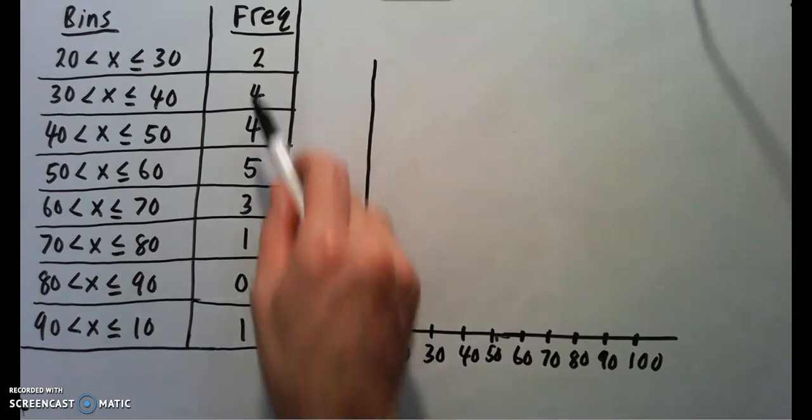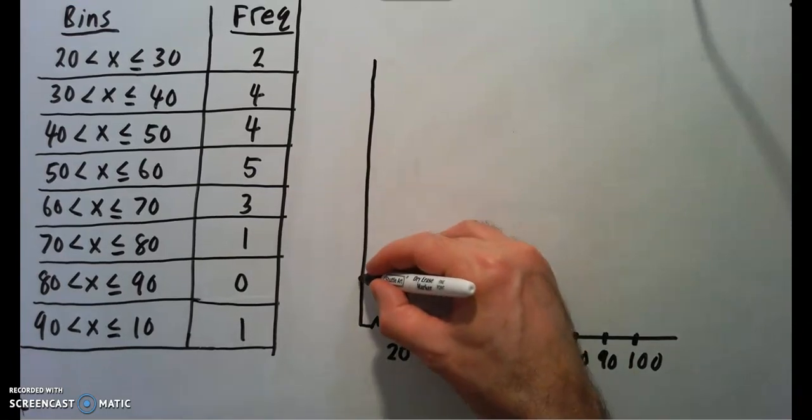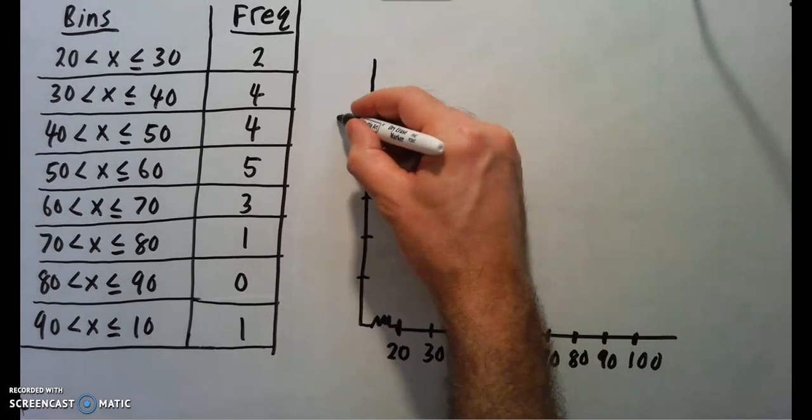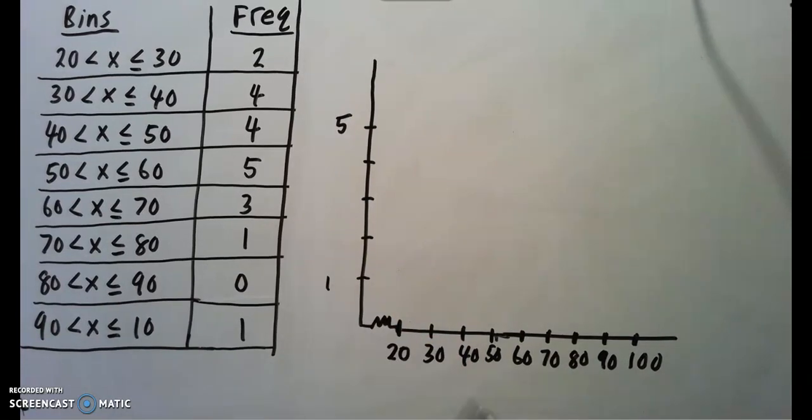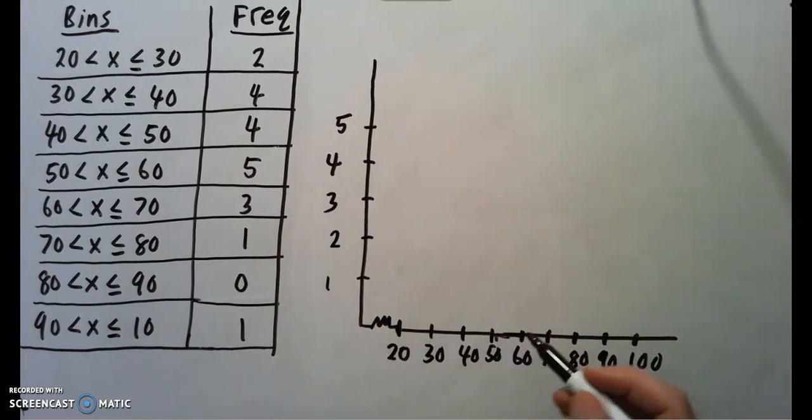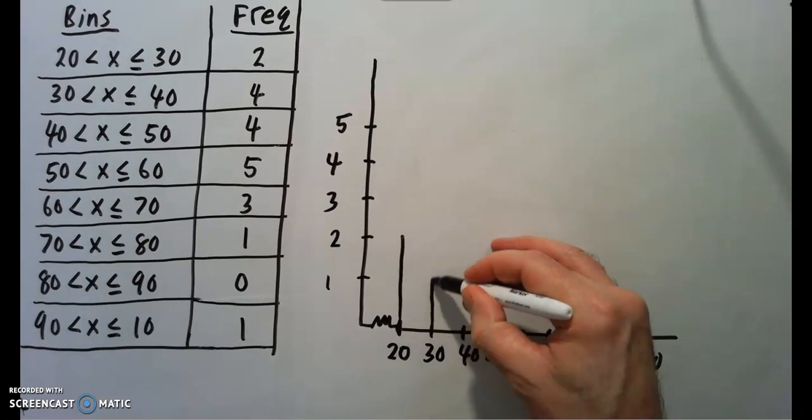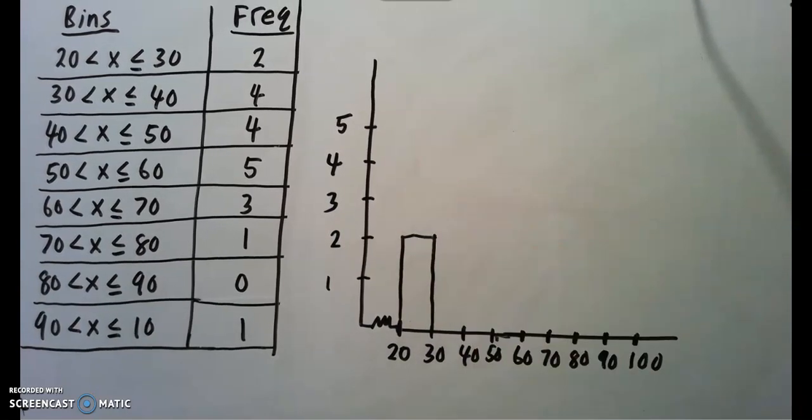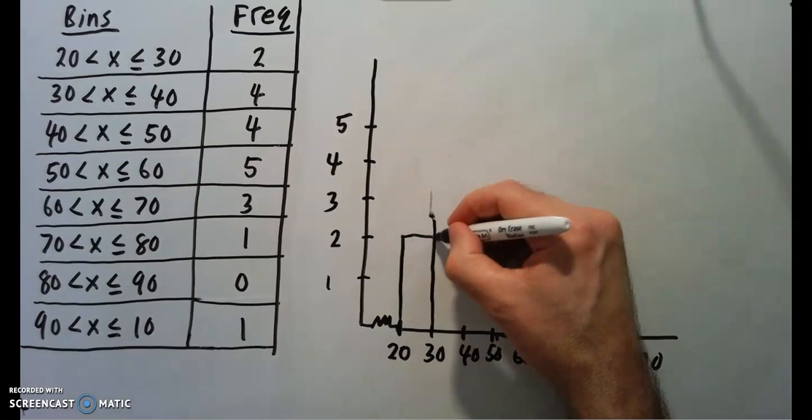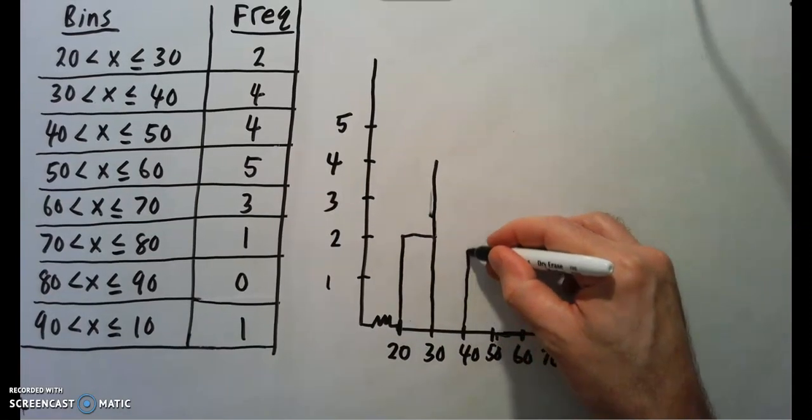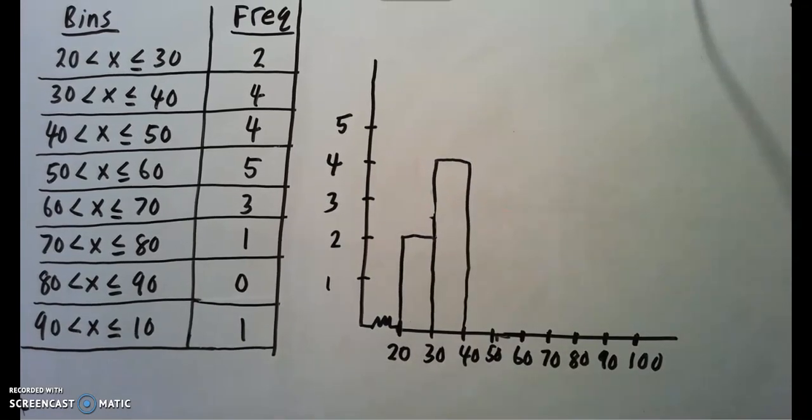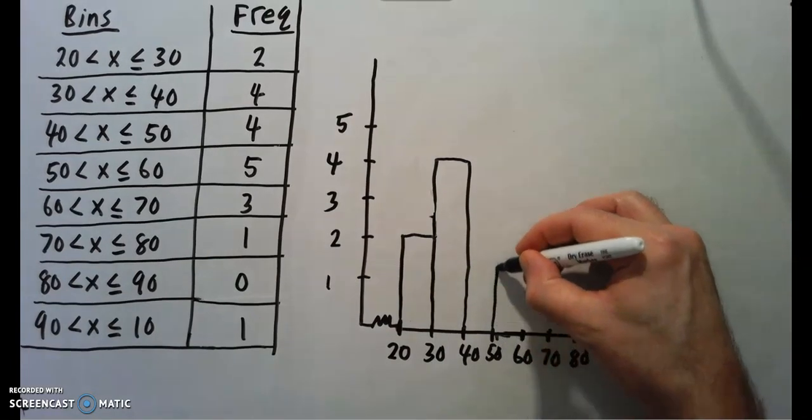And, on the y-axis now, we're going to have our frequencies. It looks like they vary between 0 and 5. So, I'll say that's 1, 2, 3, 4, 5. Our first bin has frequency 2. So frequency 2 would be like this. That would be a rectangle. Next one has frequency 4. So, up to 4. Next one also has frequency 4 between 40 and 50. So, that also has frequency 4.